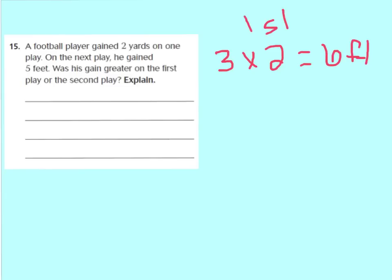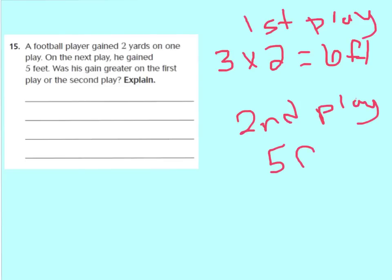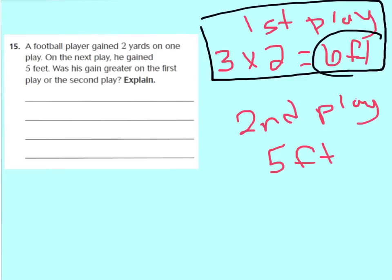His second play was 5 feet. I can already see that his first play had the bigger gain, because it was equal to 6 feet, and 6 feet is greater than 5 feet. So his first play had a greater gain.